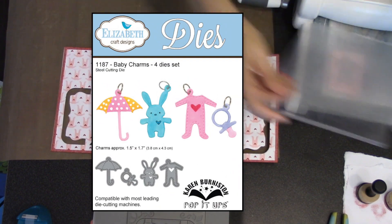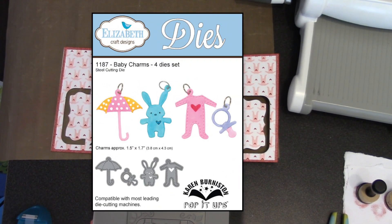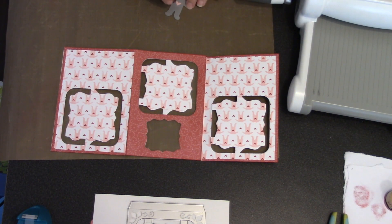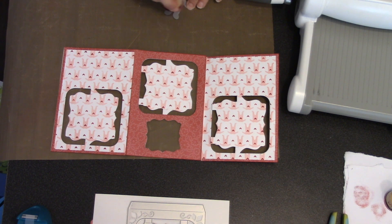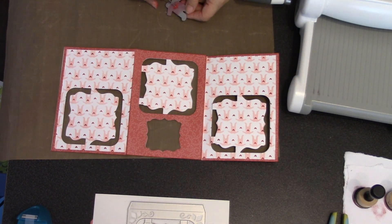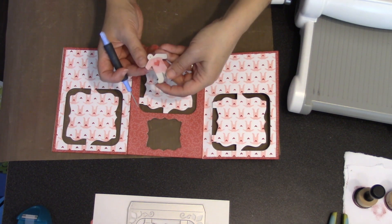The baby pajamas layering stencil actually matches the shape of one of the charms in the baby charms die set and so I'm going to go ahead and die cut that cute little pair of stitched baby pajamas out of a pink cardstock. And before I take it out of the die I'm going to sponge in the dark red through the stencil feature on the die so that it will really match the look of the stenciled pajamas.